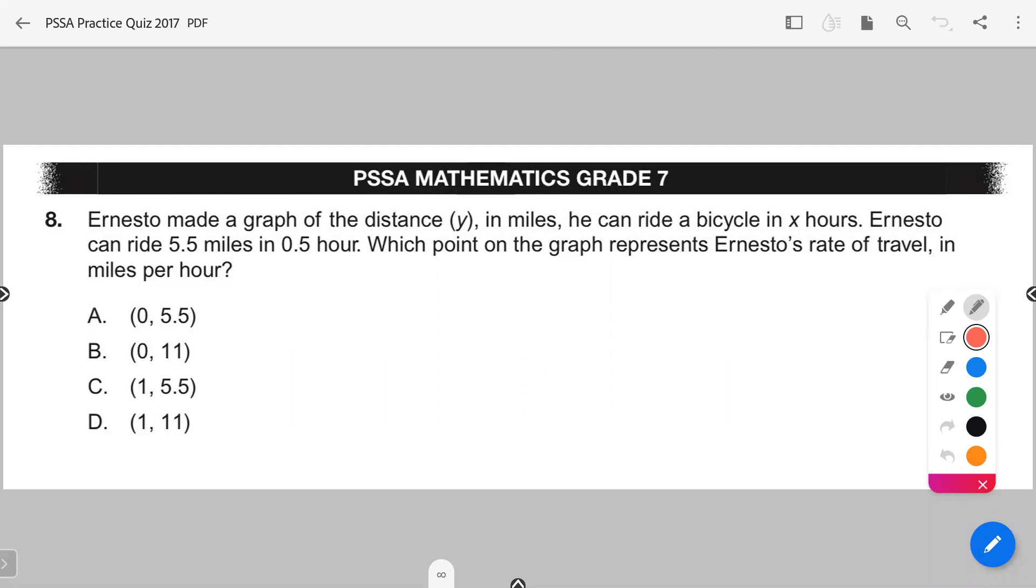Right now, we are going to show you what point on a graph would represent the actual scenario presented in this word problem. So this person here is traveling a distance in miles on their bicycle, and the other number is how long they're traveling. So look carefully.